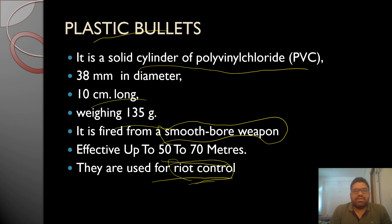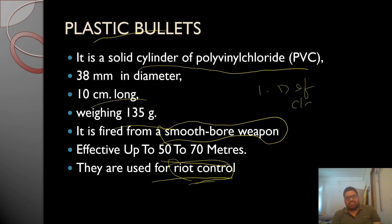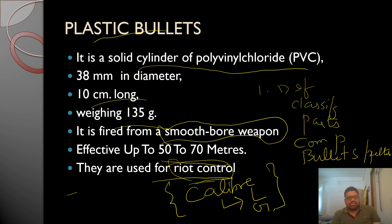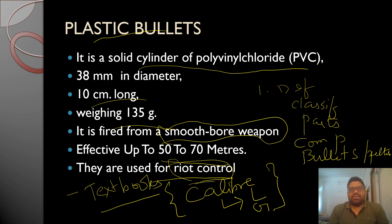Plastic bullets are PVC-made, approximately 10 cm long, fired from a smoothbore weapon, effective up to 50–70 meters, and used purely to disperse crowds without killing individuals. In summary, this presentation covered: definition of a firearm, classification of firearms, parts of each gun, components of a cartridge, classification of bullets and pellets, and the terms caliber, gauge, lands, and grooves. Refer to your theory textbook and continue with Part 2 of the video.